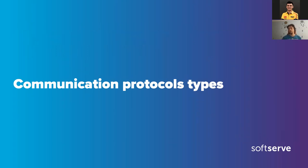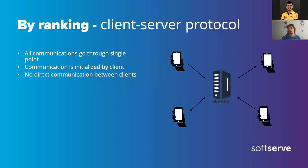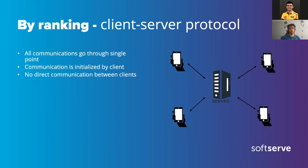The first type is client-server communication, where all devices communicate only with the server. The client initializes the connection — the server does not. It's usually single-direction communication: we send a request and the server sends a response. There is no backward information from the server by default. It could also be socket communication, where we get a ping from the server, and on mobile we also have push notifications.